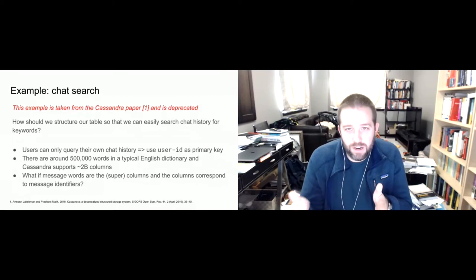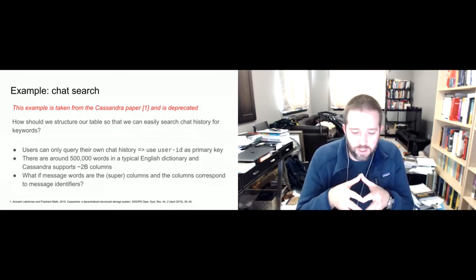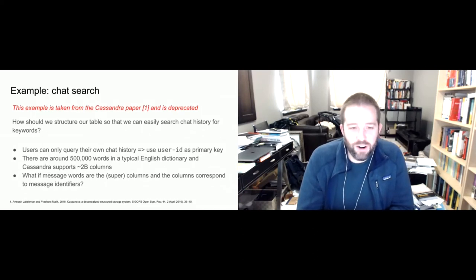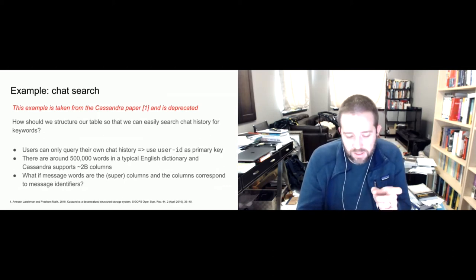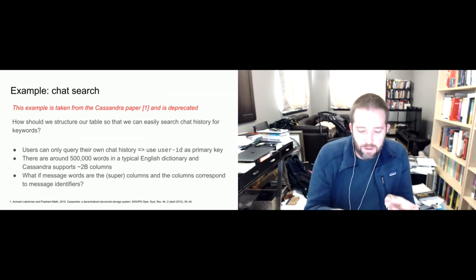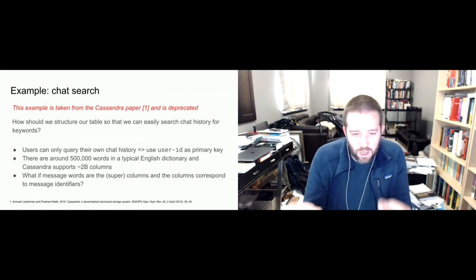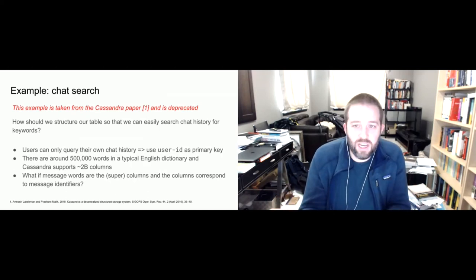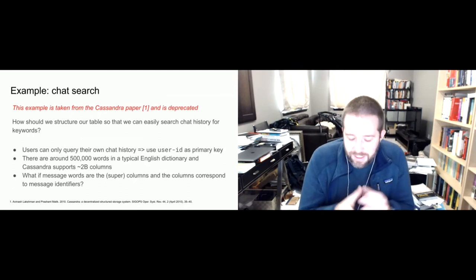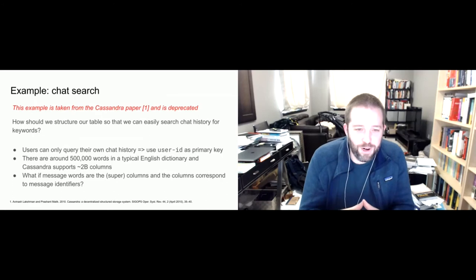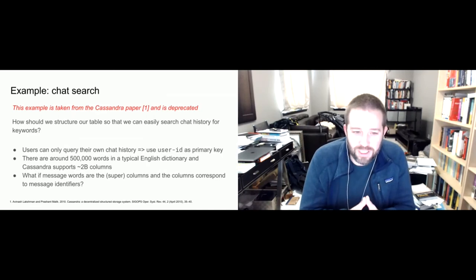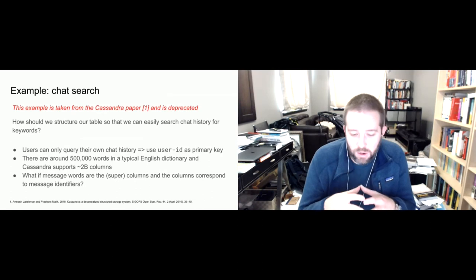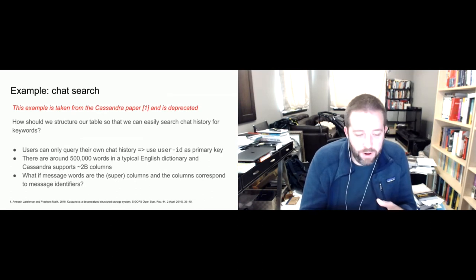Let's think through a query. A user types 'scared cats' in their search bar — we want something with the words 'scare' and 'cat.' Those two terms map to column names. The username gives us a row. For those column families, we look at message IDs as the corresponding columns. To me, that was very clever. Now modern Cassandra doesn't recommend very wide rows, so this approach is deprecated — but it took advantage of how Cassandra was designed at the time and gave a very performant solution.